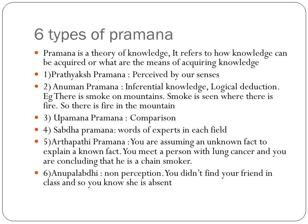Pramana is basically a theory of knowledge — it refers to how knowledge can be acquired, or what are the means of acquiring knowledge. There are six types of pramana. Pratiksha pramana means knowledge received by our senses. For example, every morning you go out, look to the east of your house, you can see the sun rising there, so you conclude the sun rises in the east. Your eyes saw it directly — that is pratiksha pramana, knowledge perceived by your senses.